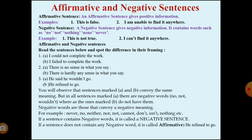In an affirmative sentence, the first example is 'This is true' and the second is 'I am able to find it.' In a negative sentence, it contains words such as no, not, nothing, none, and never. For example: 'This is not true' and 'I can't find it anyway.' So we will see a few more sentences.